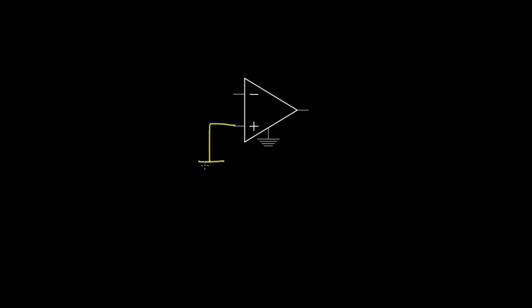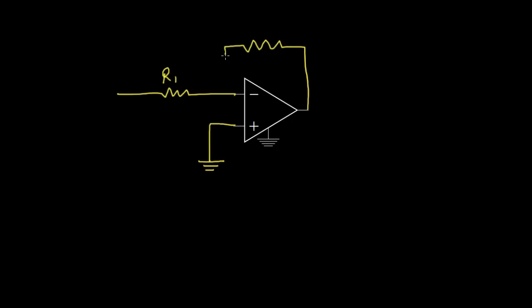To build the circuit, we'll begin by connecting the positive terminal of the op amp to ground. Next we'll attach a resistor to the negative input and assign a resistance value R1 to that resistor. Then, to ensure that we have negative feedback in the circuit, we'll take the output and feed that back with a resistor of resistance R2.